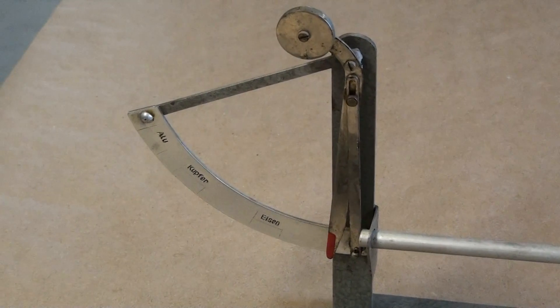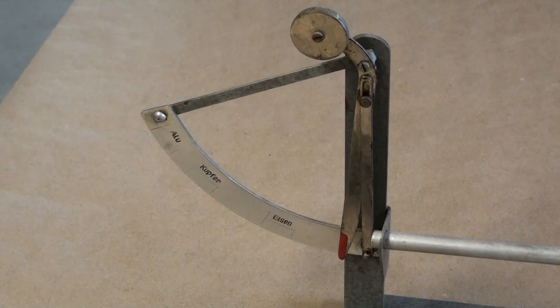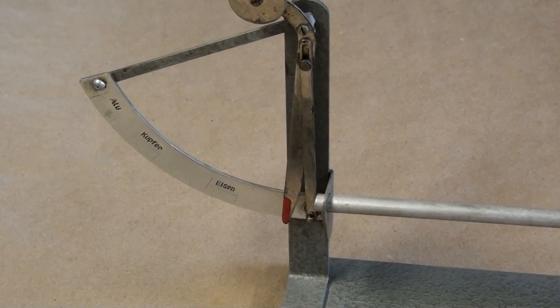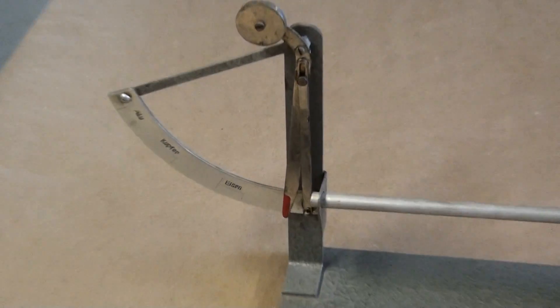This will indicate the amount of expansion. As we see really close here, just a slight movement down to the bottom will cause a movement of the needle upward, up towards the aluminum range.